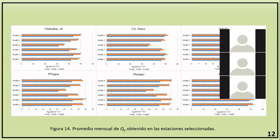Para observar y comparar el comportamiento de la radiación PAR en las estaciones seleccionadas, se obtuvo el valor mensual de cada una. La figura 14 muestra el valor mensual de la radiación PAR en moles por metro cuadrado por día. Al comparar, se observa que el valor mensual es bajo en abril, mayor en mayo e igual o menor en junio, lo cual es consistente con el avance de la primavera y el comienzo de la temporada de lluvias en junio. Todos los modelos tienen un comportamiento similar en cada una de las estaciones.